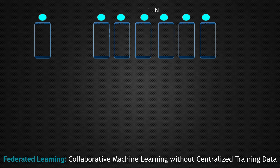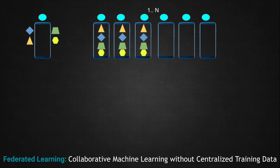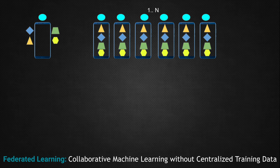The machine learning model running on these devices starts learning from the data available on each individual machine. It slowly improves itself, and these improvements can be very specific to the activities happening on that device and the data being generated by those individual activities. Similarly, all N devices start learning and improving themselves based on their own individual activities.